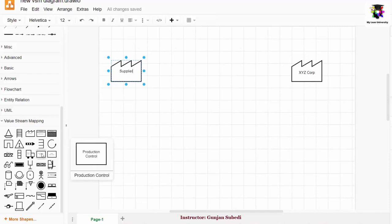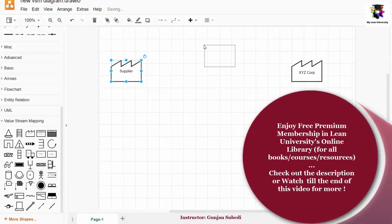And there is a production control symbol over here, or we can also choose this symbol as a control center. Between customer and supplier, there is always the production control.